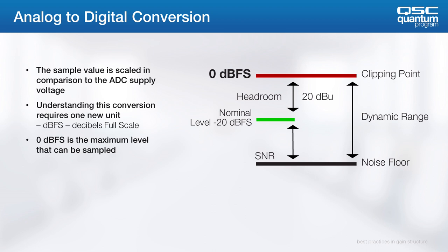Different A-to-D converters will have different supply voltages, so the input signal is scaled down from that value. That introduces the idea of dBFS, or full scale. Many integrators get confused because certain DSP manufacturers represent their input meters in dBu and train on gain structure accordingly, recommending zero dBu nominal input. Other DSP platforms such as Q-SYS use input meters in units of dBFS, not dBu. So if you apply that other knowledge in Q-SYS, every time a microphone has a peak, it would force it into clipping. Units really matter in this situation.